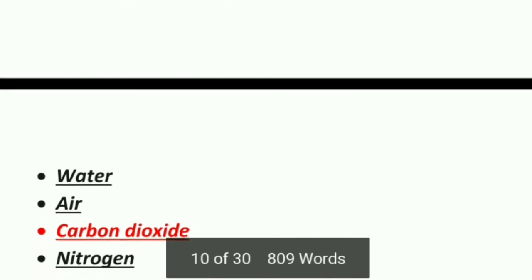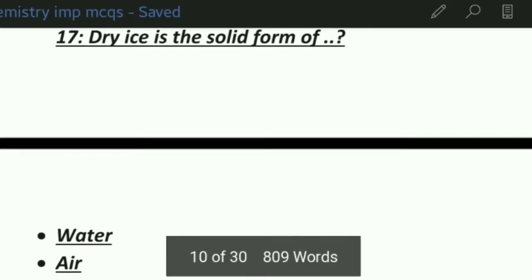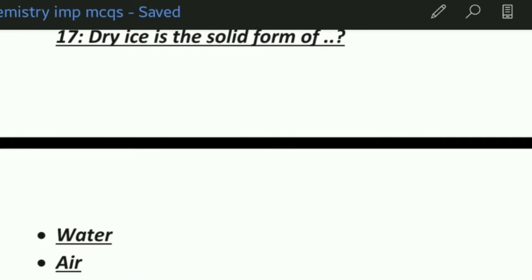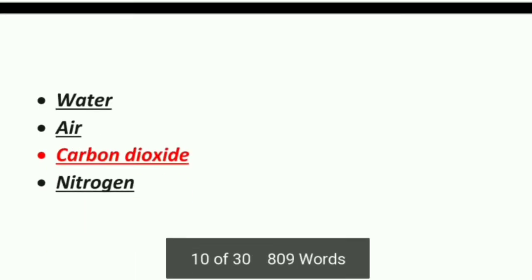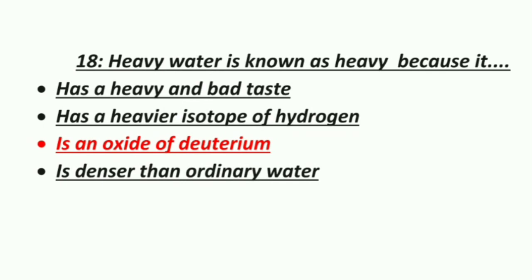Seventeenth MCQ: dry ice is the solid form of — Option 1: Water, Option 2: Air, Option 3: Carbon dioxide, Option 4: Nitrogen. The correct answer is carbon dioxide — dry ice is the solid form of carbon dioxide.